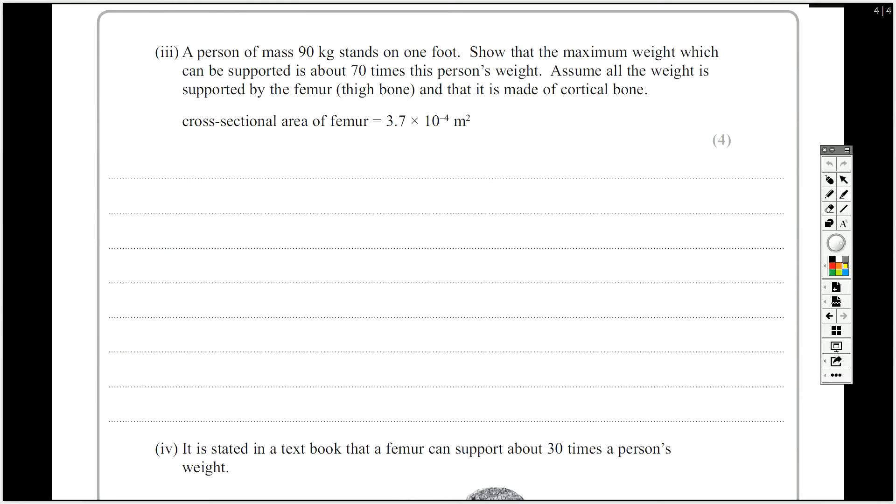So this one starts to get a little bit trickier now. Person of mass 90 kilograms. So let's just make sure we know what data we've got as we read through. Show the maximum weight, which can be supported about 70 times this person's weight. That's what we've got to do. We'll show that. Assume all the weight supported by the femur is made of cortical bone. So that's a clue as to some of the data that we've got. We've got the cross-sectional area.